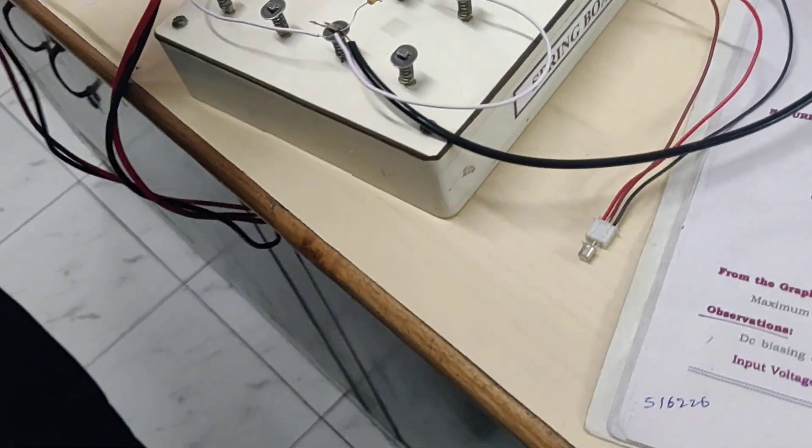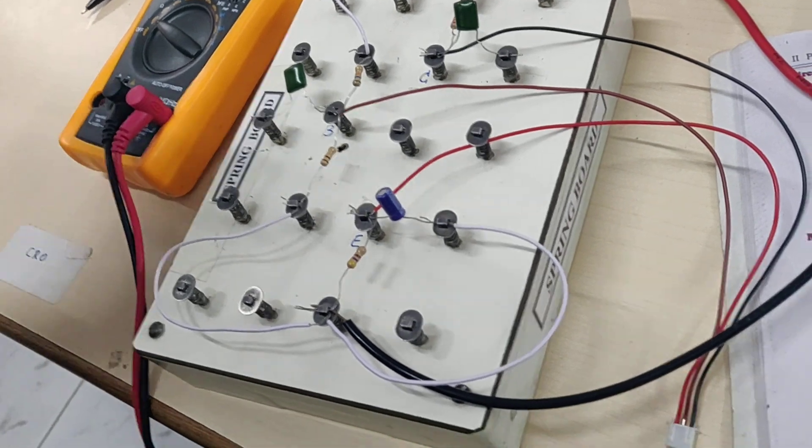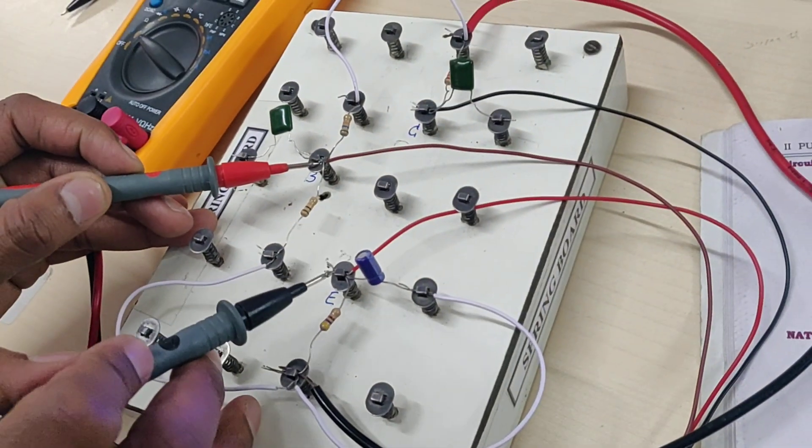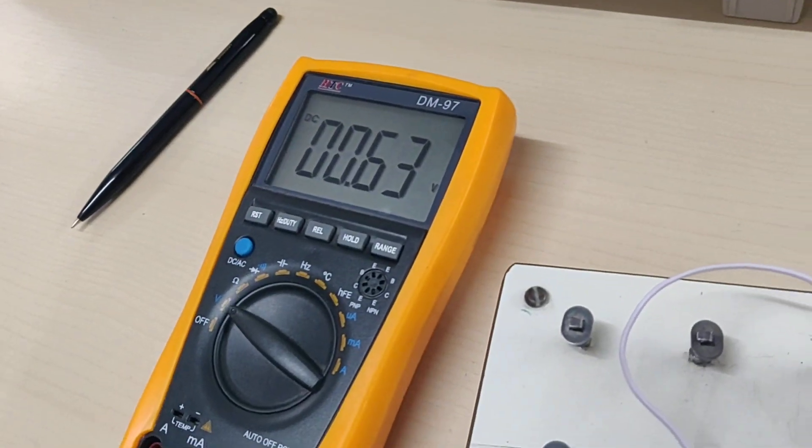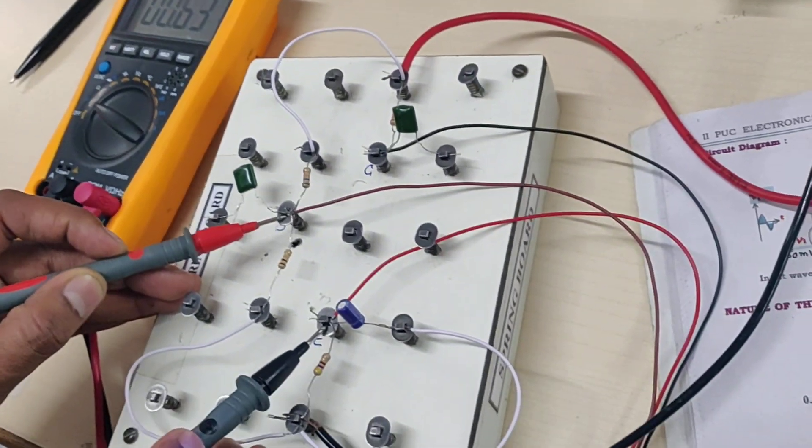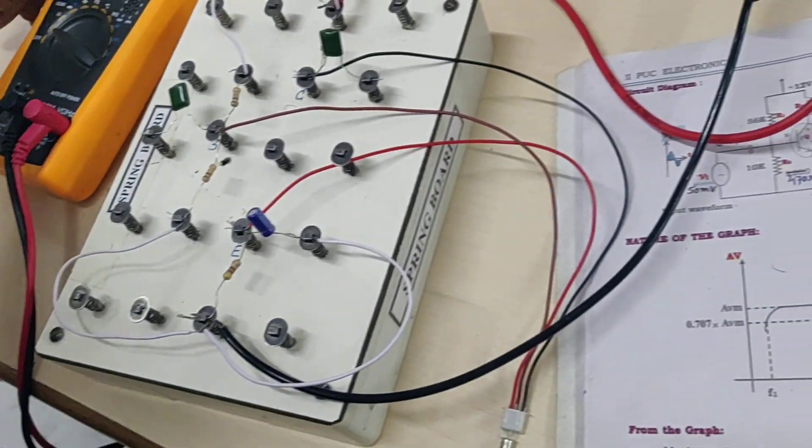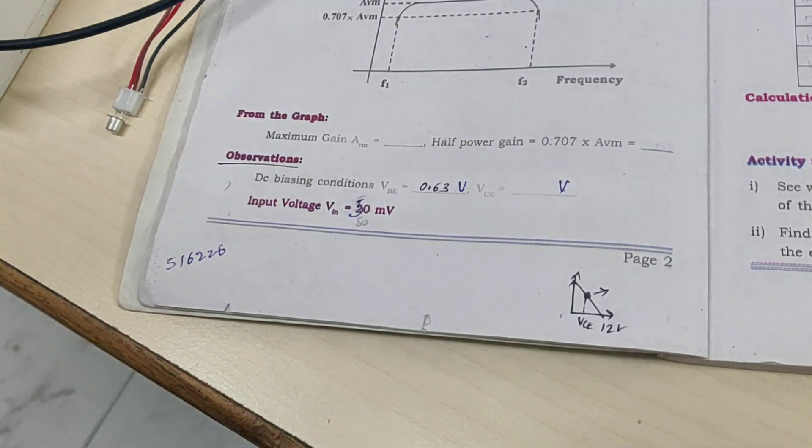This is positive, this is negative. We shall keep the positive terminal to the base side and negative to the emitter side. It is coming 0.63 volts. Theoretically it should be nearly 0.7 volts. We are getting 0.63 volts for VBE. Let me note down this biasing condition.